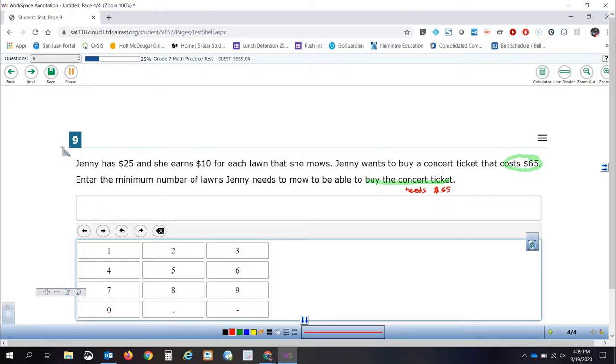Jenny needs $65. That's what she needs. And Jenny has $25. That's how much she has right now. If she has $25 and she needs $65, the question we need to ask is: how much more does she need? And to find that, we're going to subtract. I'm going to take the total that she needs, which is $65, and subtract the $25 that she already has. $65 minus $25 is $40. So Jenny needs to earn $40. She needs $40 more.